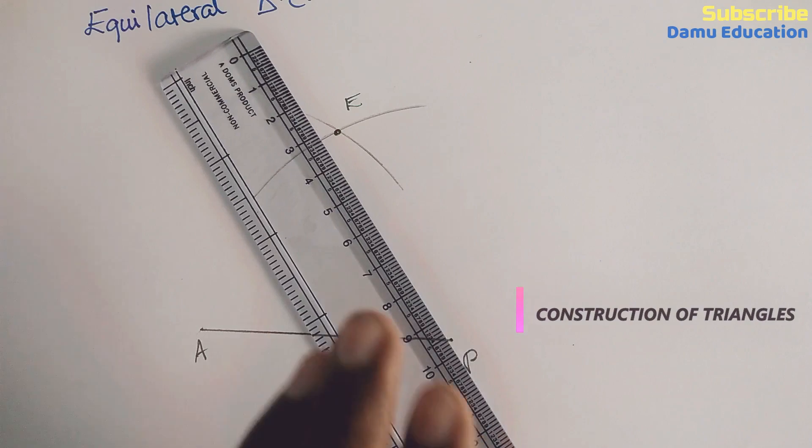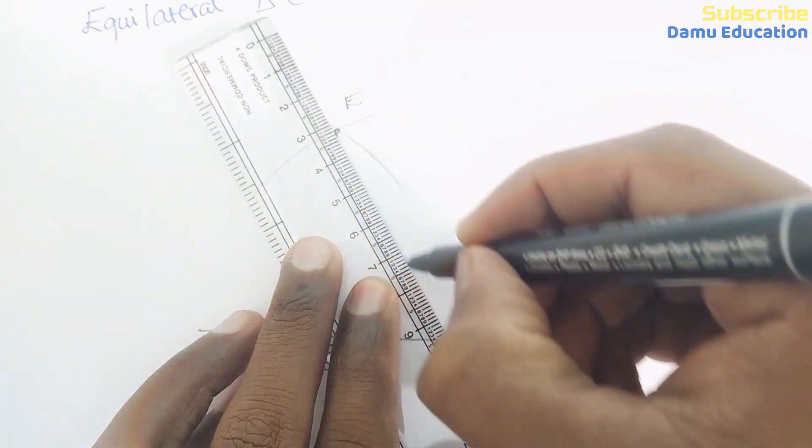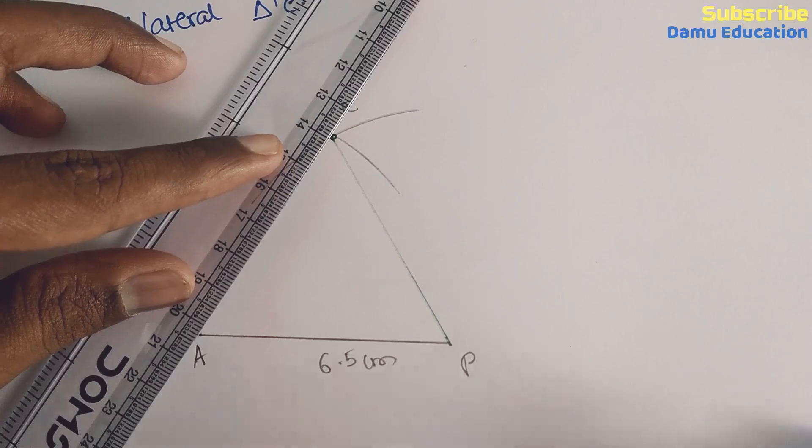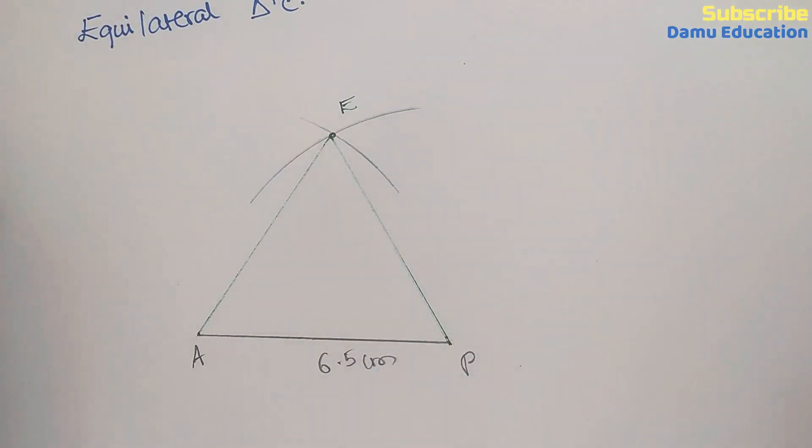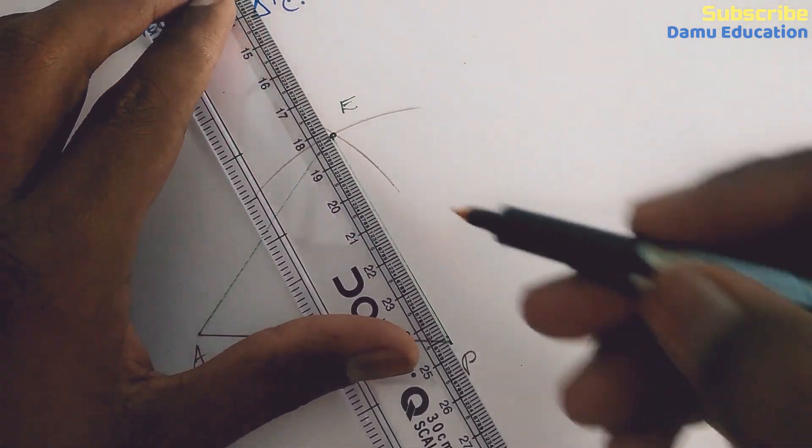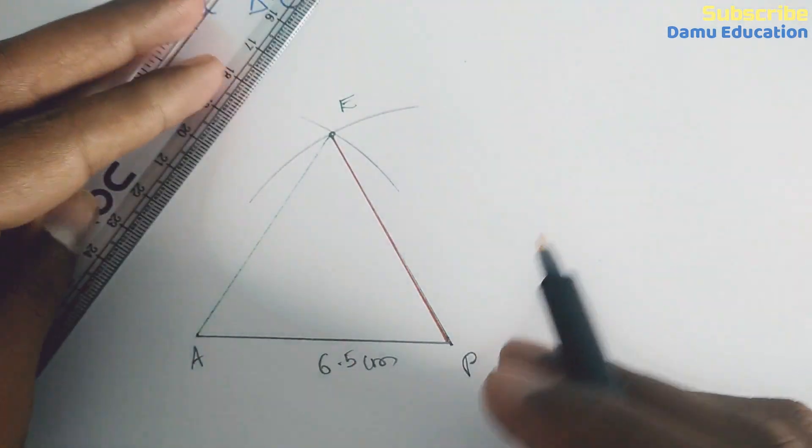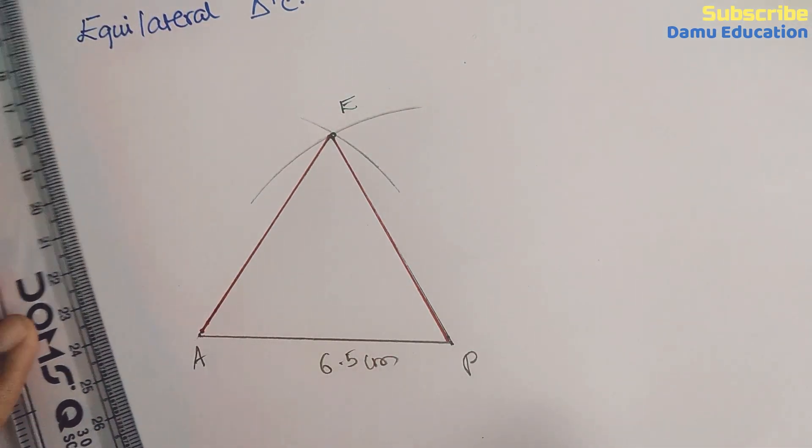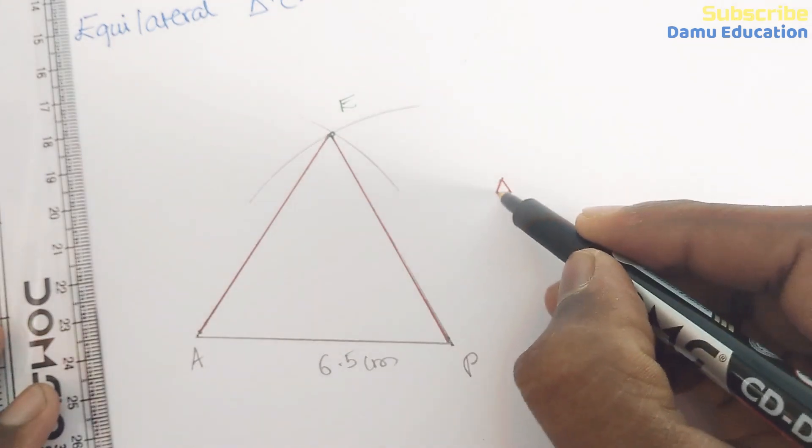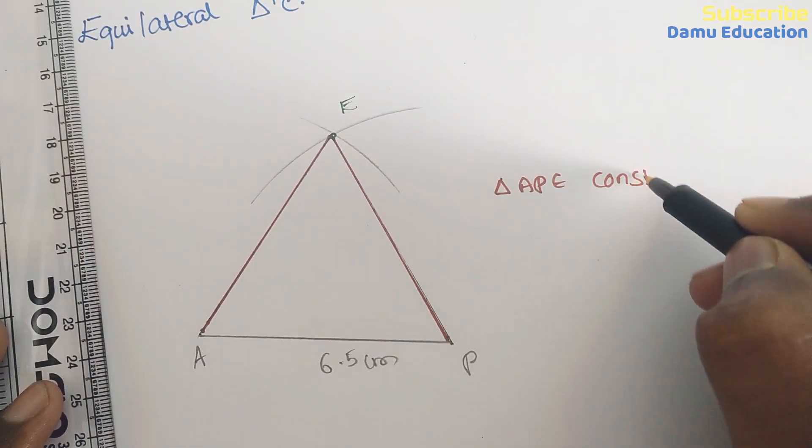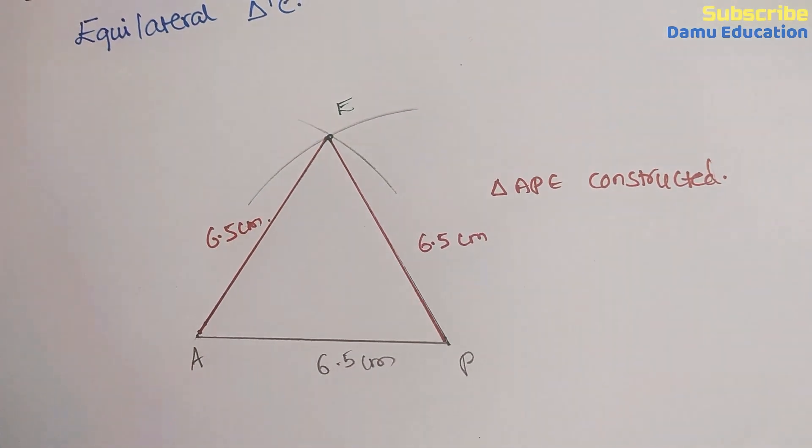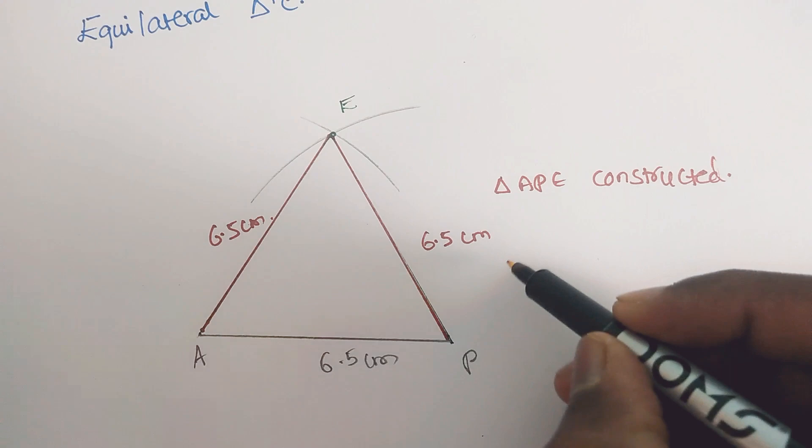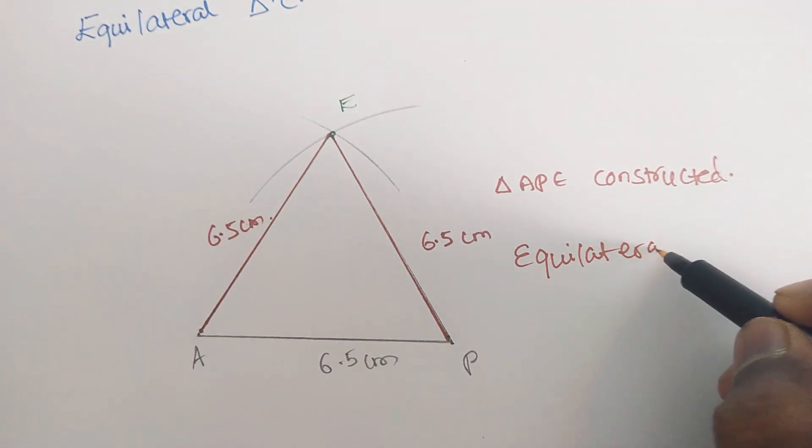Join PE and AE. Then the required triangle is constructed - triangle APE. Finally, triangle APE is constructed. All the sides will be equal, so triangle APE is an equilateral triangle.